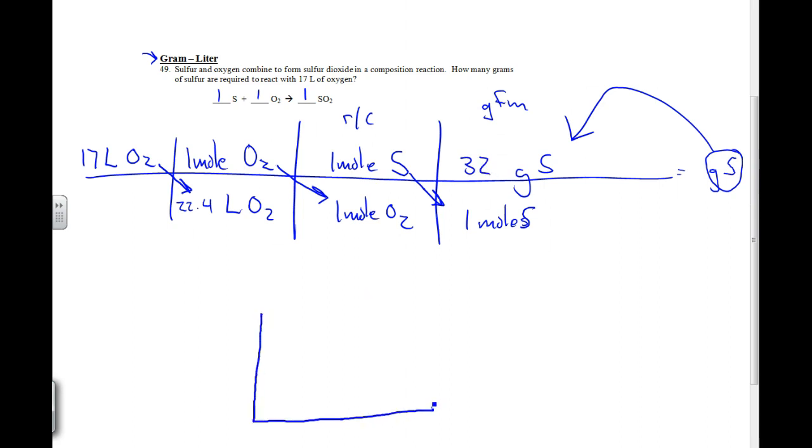That 32 grams came from my element box for sulfur, which says 32 and 16. The larger number is the molar mass or the gram formula mass, which is grams per one mole. That's 32.